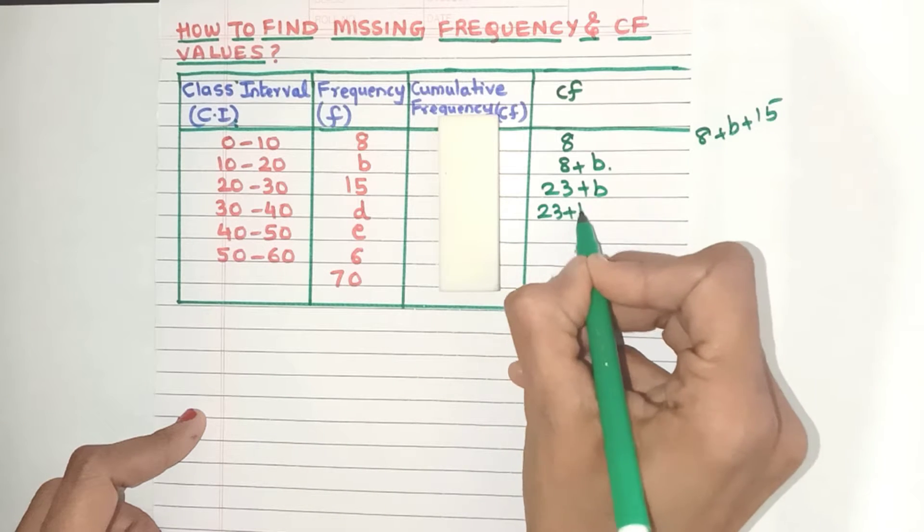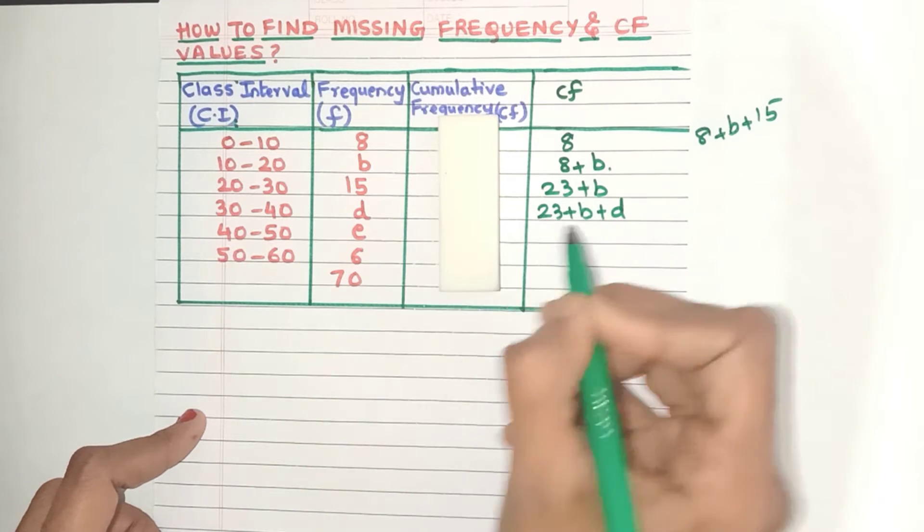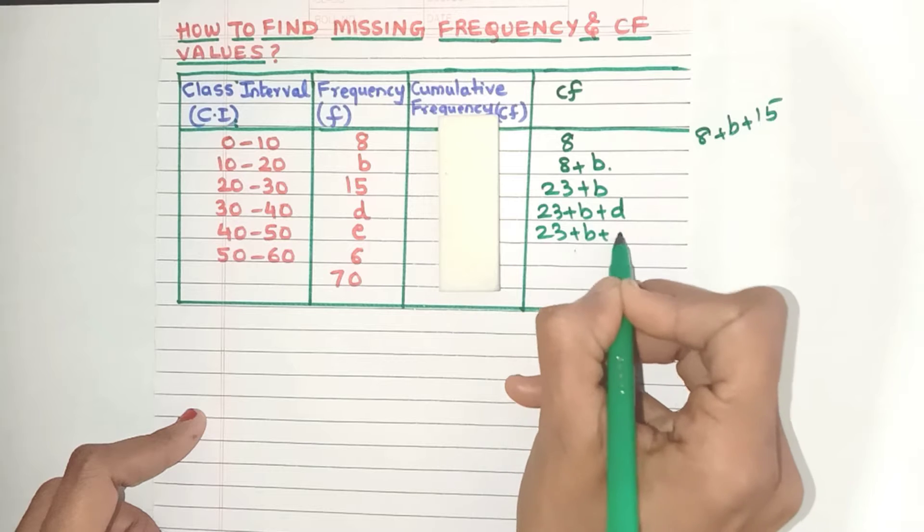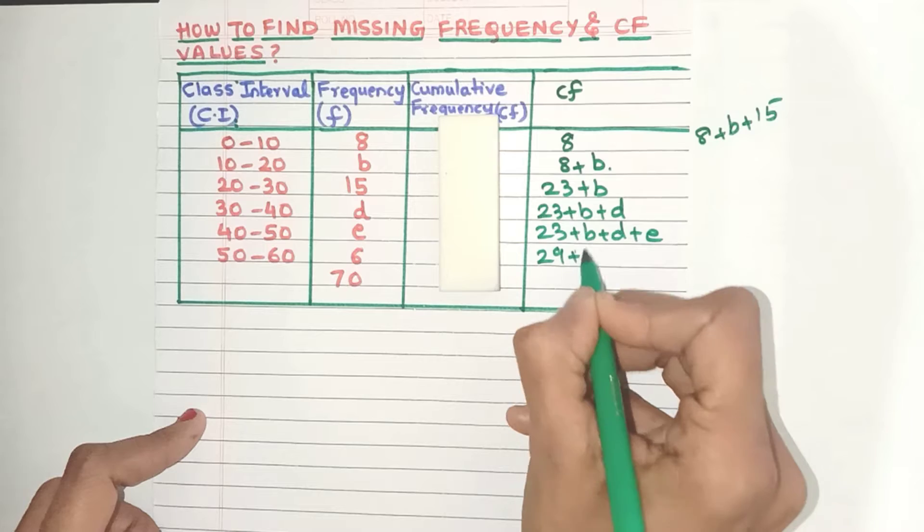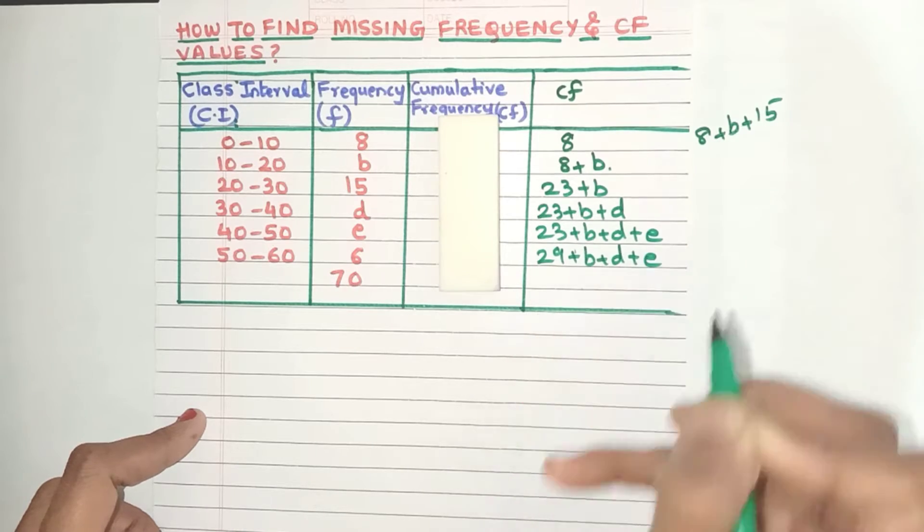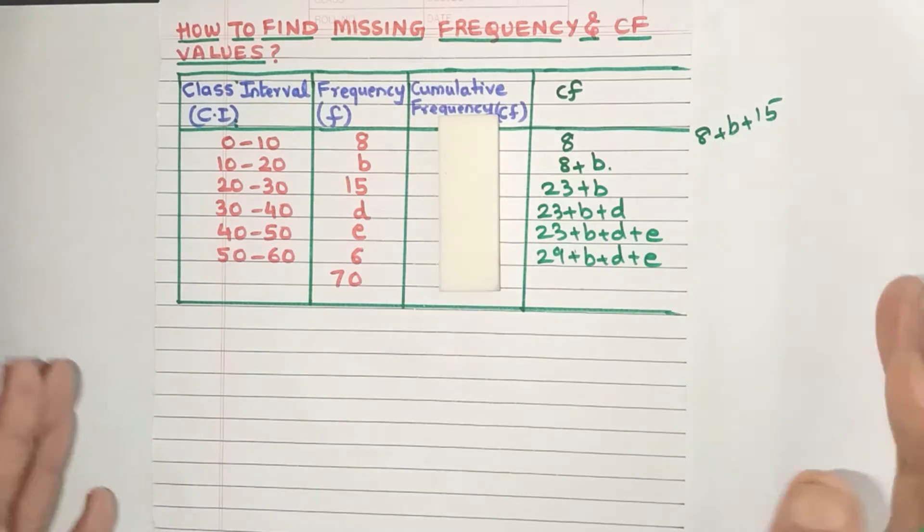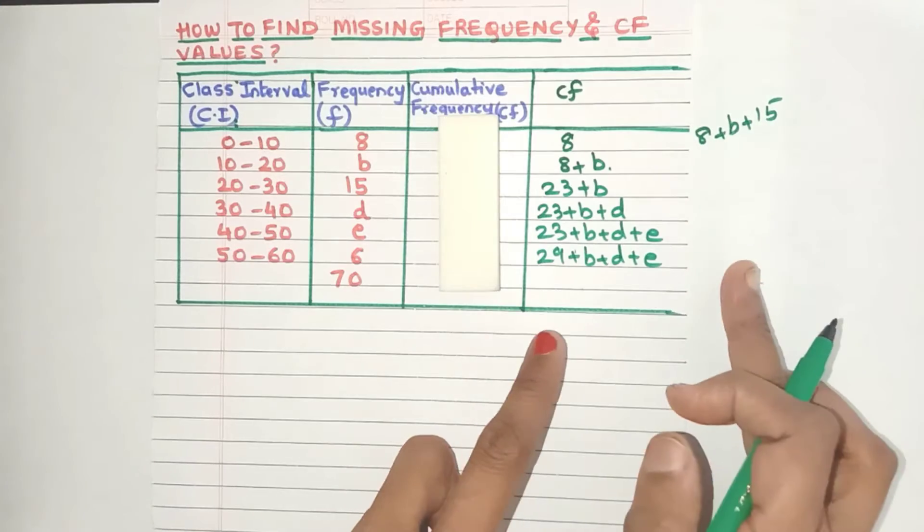Let's continue. Here I'll get 23 plus B plus D. Again, 23 plus B plus D plus E. Now here I'll get 23 plus 6 which is 29 and then copy all the remaining terms. So now we have created our CF column.